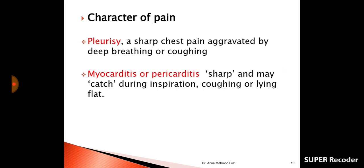The second important point is the character of the pain. Pleurisy pain is described as sharp, stabbing, or catching, aggravated by deep breathing or coughing. Pericarditis or myocarditis pain is similarly sharp and catching, increased by inspiration and coughing, but also aggravated by lying flat and on swallowing, and usually relieved by leaning forward. The difference between pleurisy and pericarditis pain is that pericarditis is aggravated by lying flat and swallowing and relieved by leaning forward.